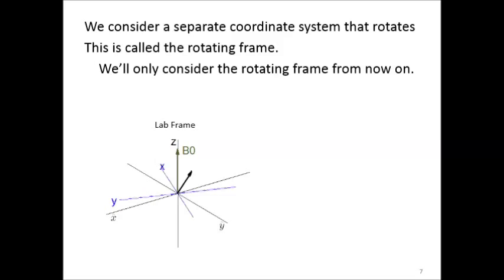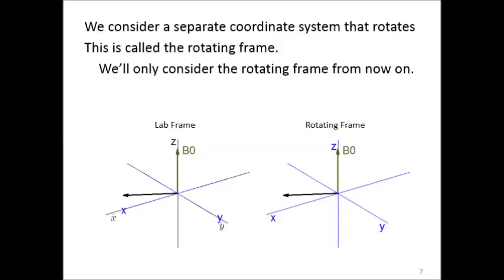We consider a separate coordinate system that rotates, called the rotating frame, shown here in blue. It's rotating at the Larmor frequency, so that in the rotating frame, the particle's magnetic vector remains stationary, whereas in the lab frame, the particle's magnetic vector continues to precess around the external magnetic field, B0.